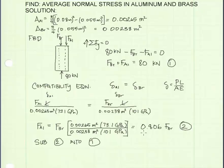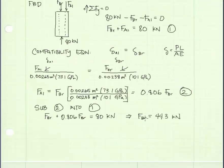In the next step, I'm going to substitute equation 2 into equation 1. I get, for the force in the brass, a value of 44.3 kilonewtons. Using equation 2, I can now solve for the force in the aluminum. I get 35.7 kilonewtons.